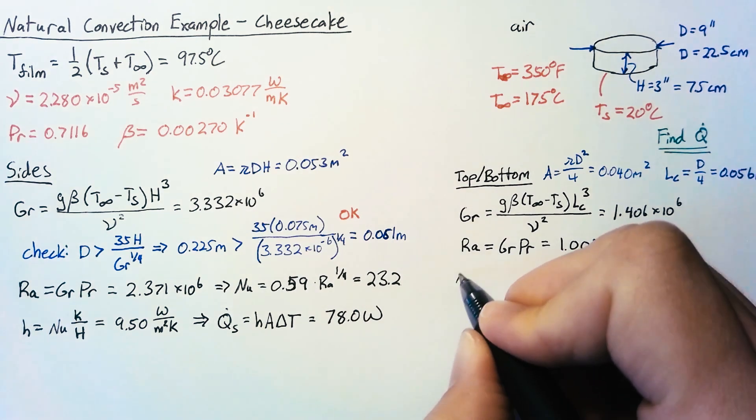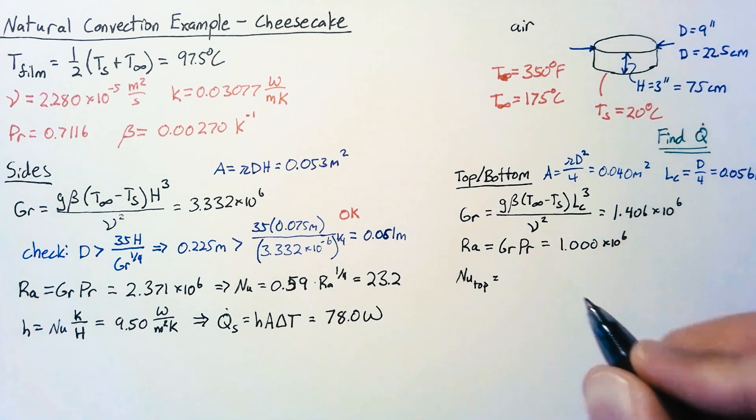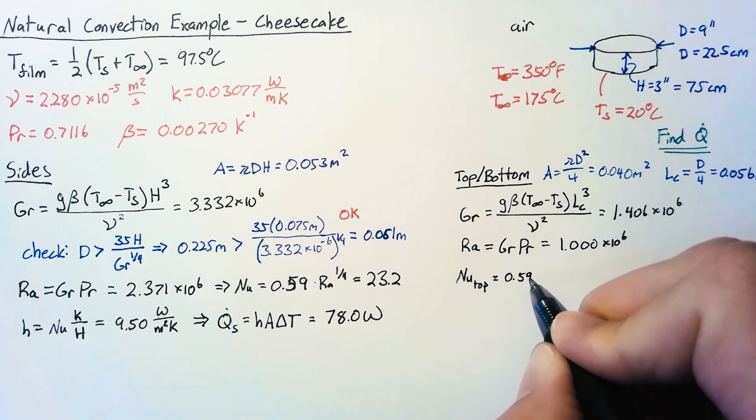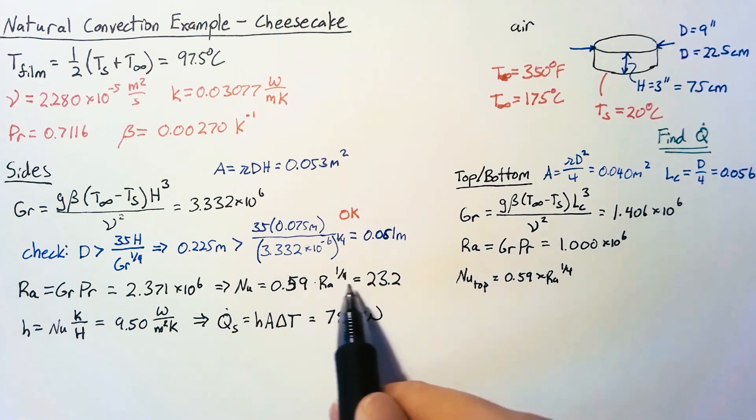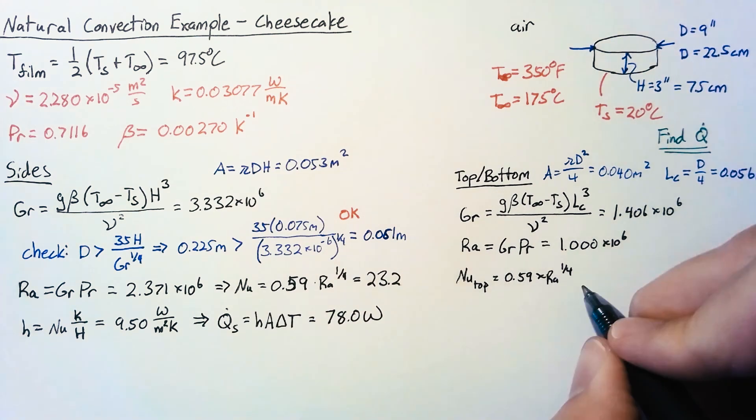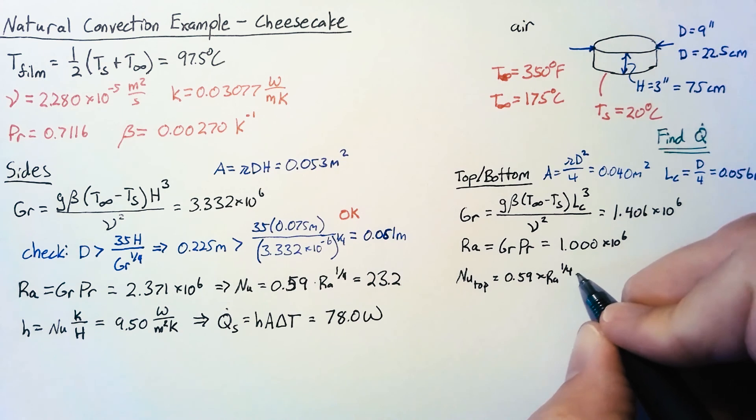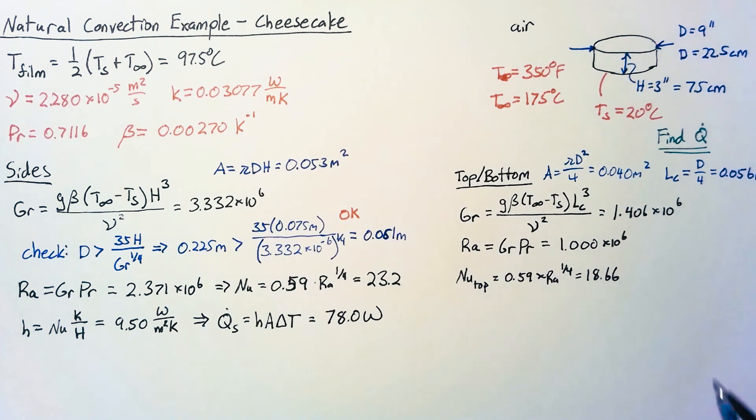Our Nusselt number for the top we get an equation of 0.59 times our Rayleigh number to the one fourth which ends up being the exact same equation as for a vertical surface but this is 18.66 for this case and the Nusselt number for the bottom is 0.27 times the Rayleigh number to the one fourth and for the bottom our Nusselt number is going to be 8.54.